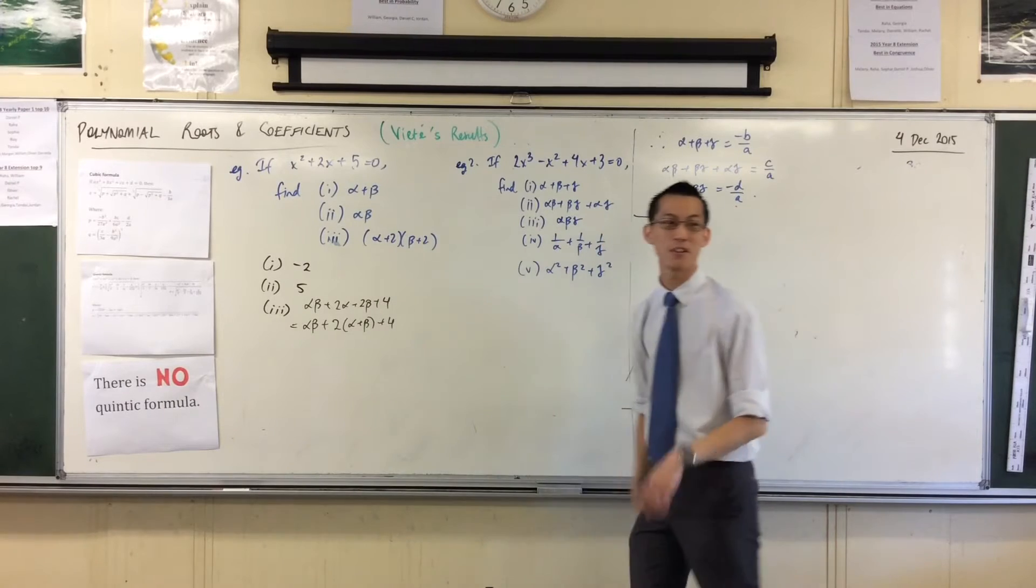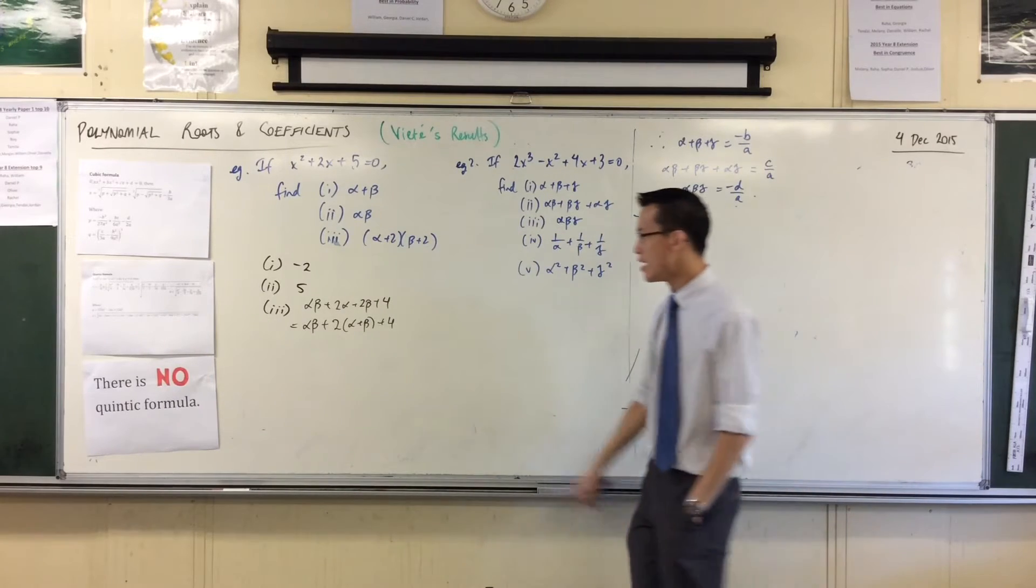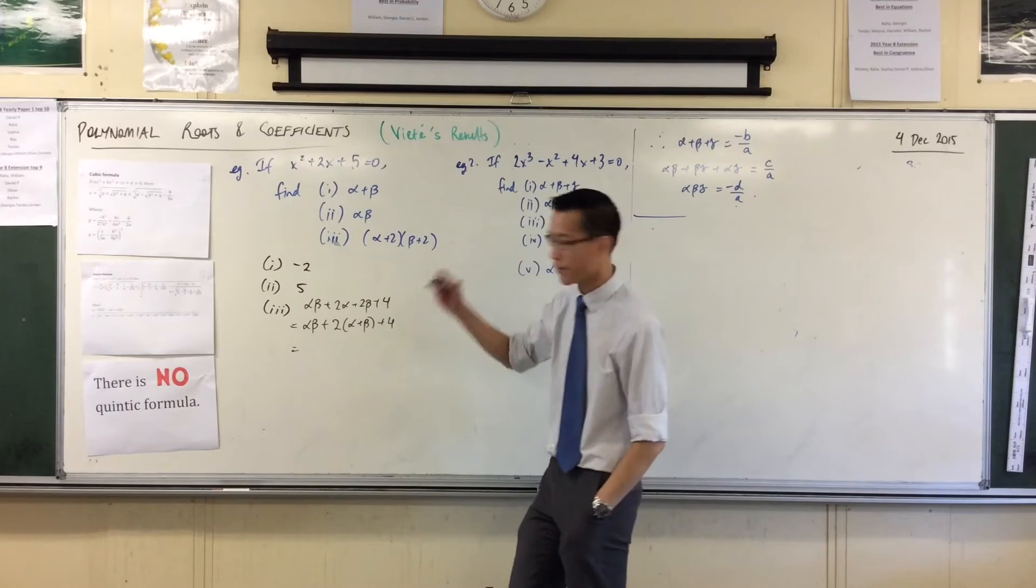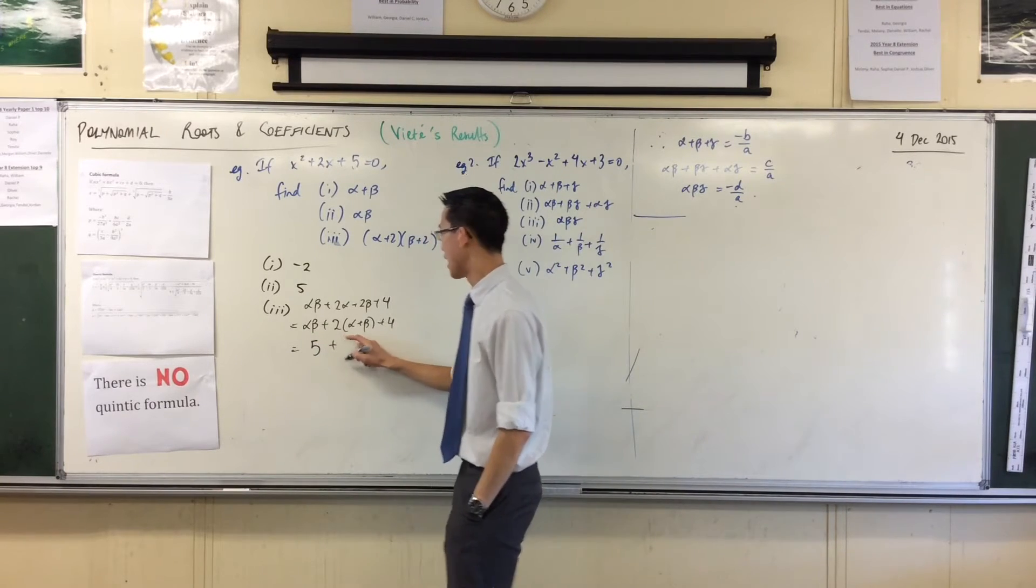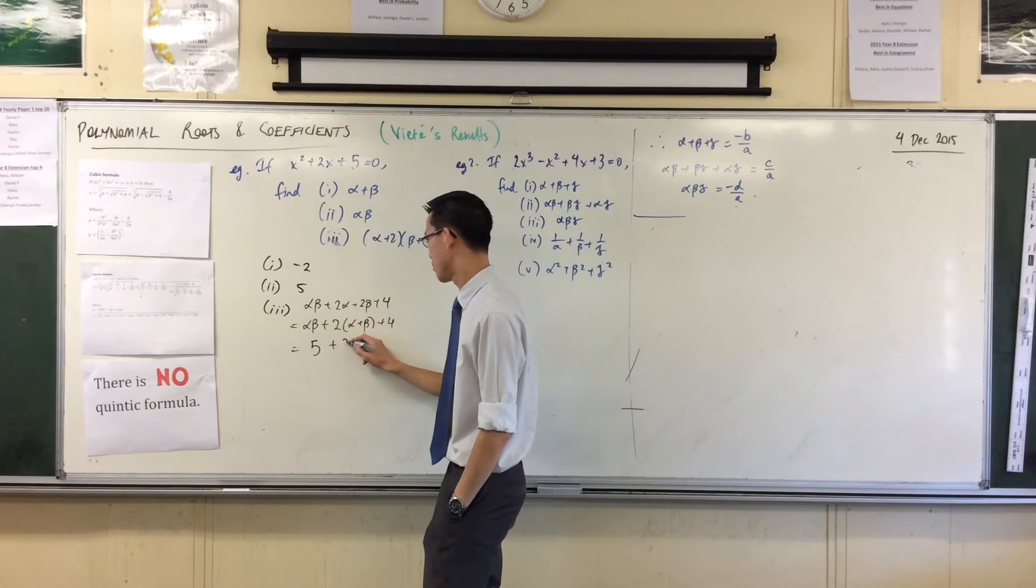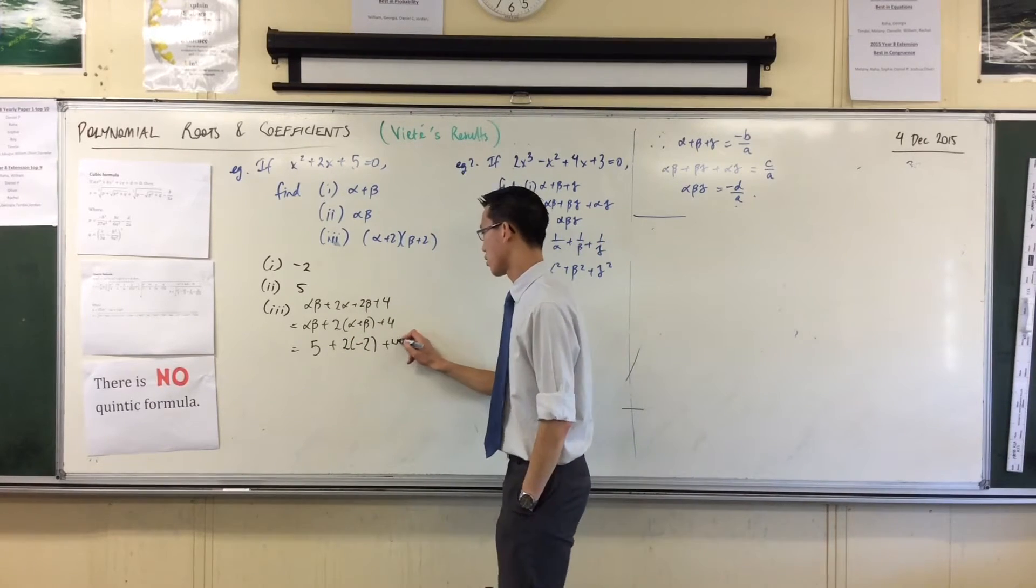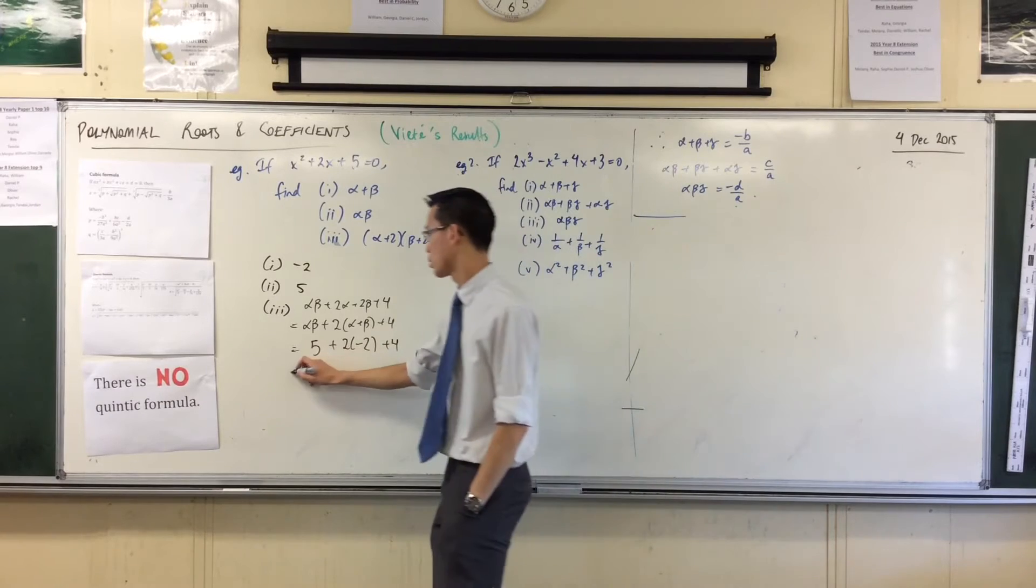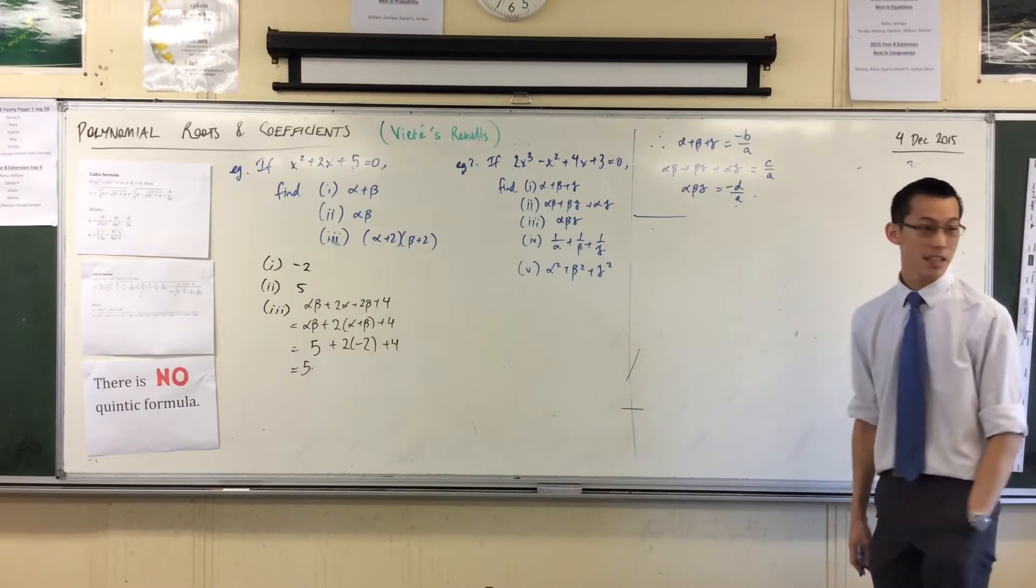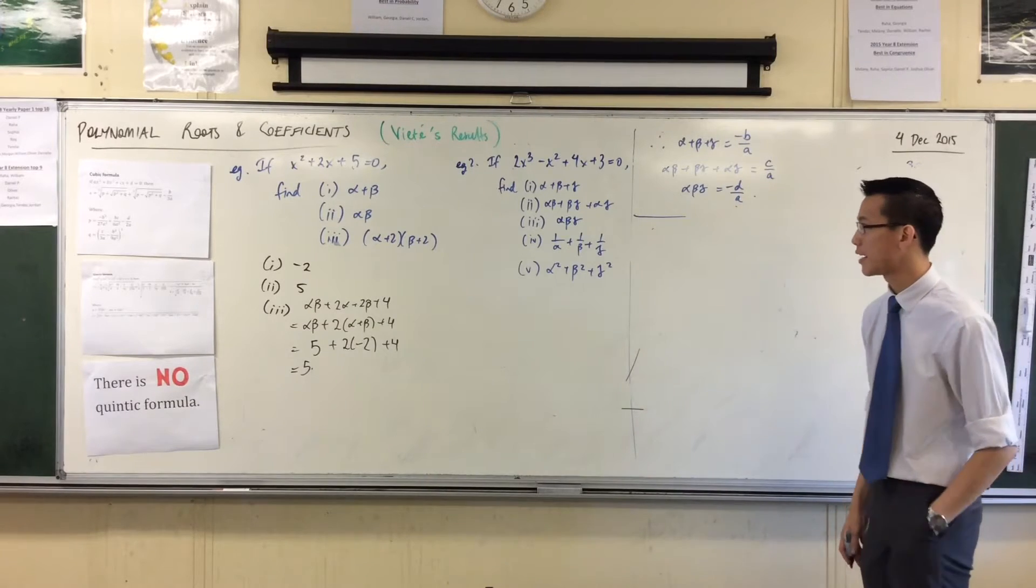You can combine them in an incredible amount of ways. So if you have a look at this, I know what alpha beta is, it's 5. I know what alpha plus beta is, it's negative 2. And then I've just got a 4 hanging out on the end. So that looks to me like it's equal to 5. Does that make sense? Not too complicated, is it.